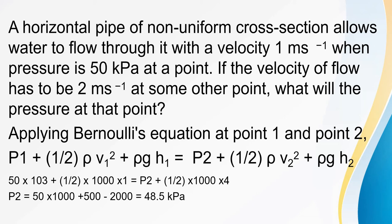Since it is a horizontal pipe, ρgh₁ = ρgh₂, so those terms cancel. Applying Bernoulli's principle: p₁ + ½ρv₁² = p₂ + ½ρv₂². With p₁ = 50 × 10³ Pa, ½ × 1000 × 1² = 500, and ½ × 1000 × 2² = 2000, we get p₂ = 50,000 + 500 − 2000 = 48.5 kilopascal.